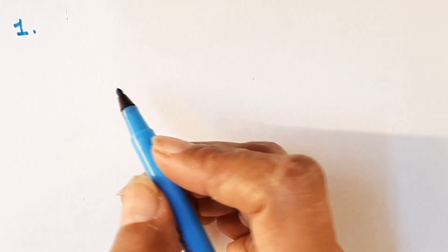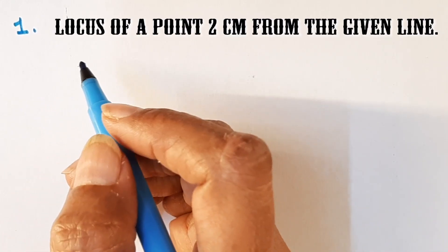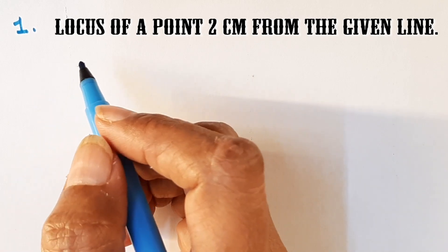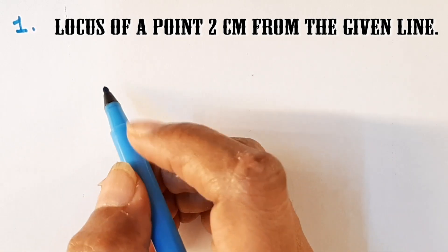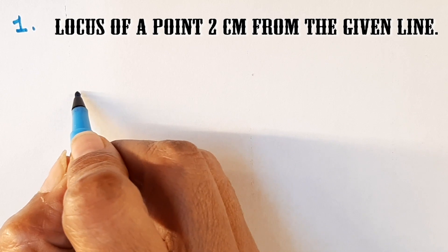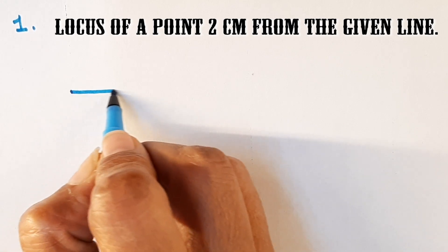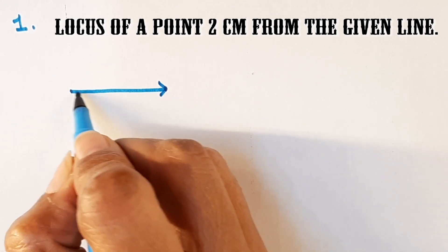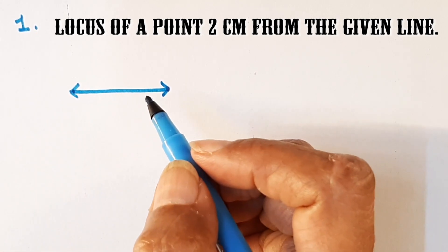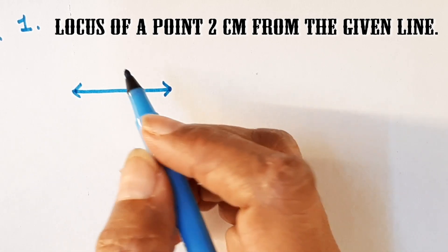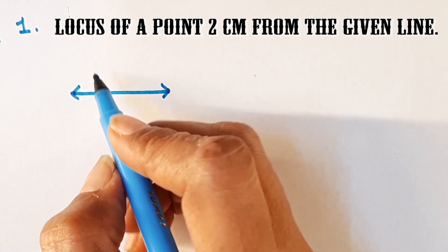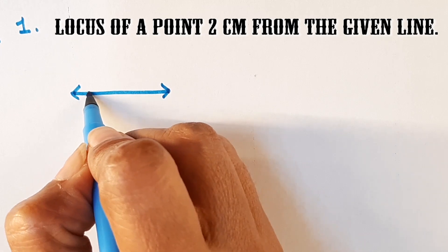Example number 1: to understand the locus of a point 2 cm from the given line. Now, in order to understand this, we will show a line. Let us say this is our line, and the point has to be 2 cm away.